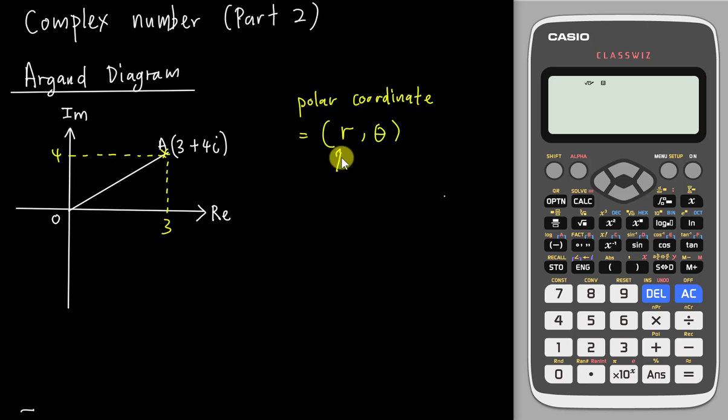So r over here, they have a name for it, they call modulus. And theta over here, they have another name for it, they call argument. So the angle must be always between the vector and the x-axis. And r will be the radius, and it will be always the hypotenuse.